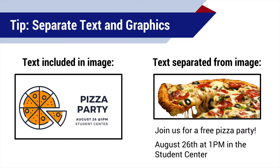This last tip is just for images that you create yourself. If possible, don't create an image that includes text as part of the picture. When your text is really just a picture of text, like in the pizza party example, you'll have to re-enter all that information as alternative text any time you use the image. If you separate your text and your graphics, you'll save yourself time and make the information easier for everyone to understand. For example, in the pizza party promotion on the right, you can mark the image of a pizza as decorative and let the text communicate your meaning.